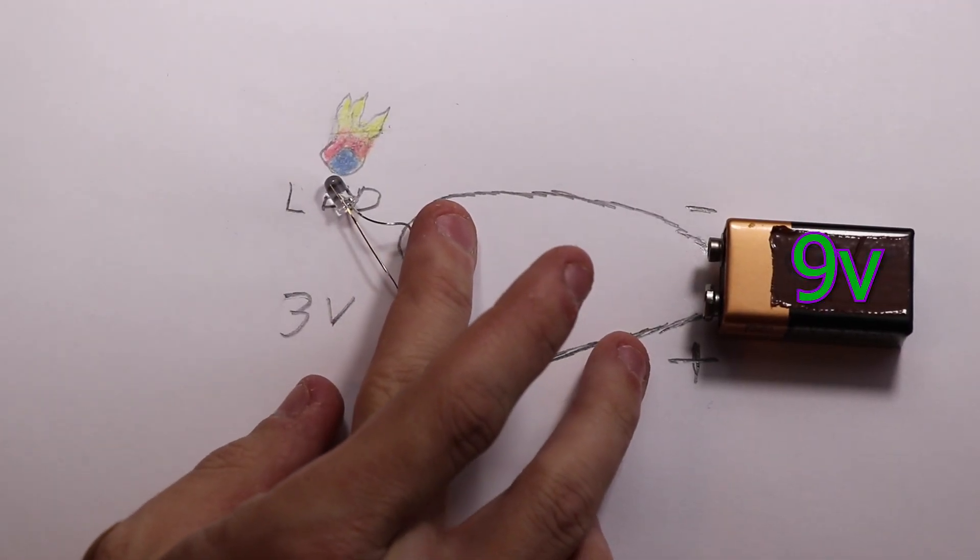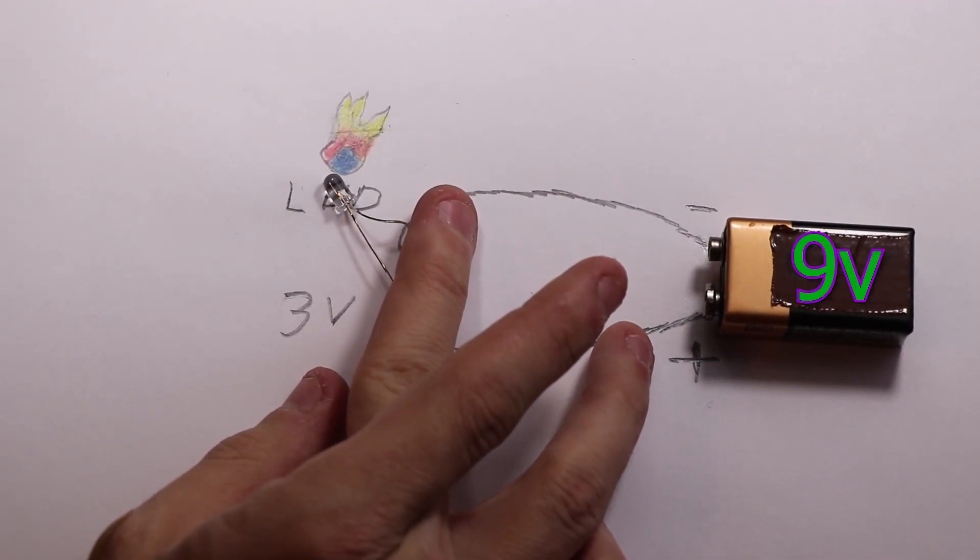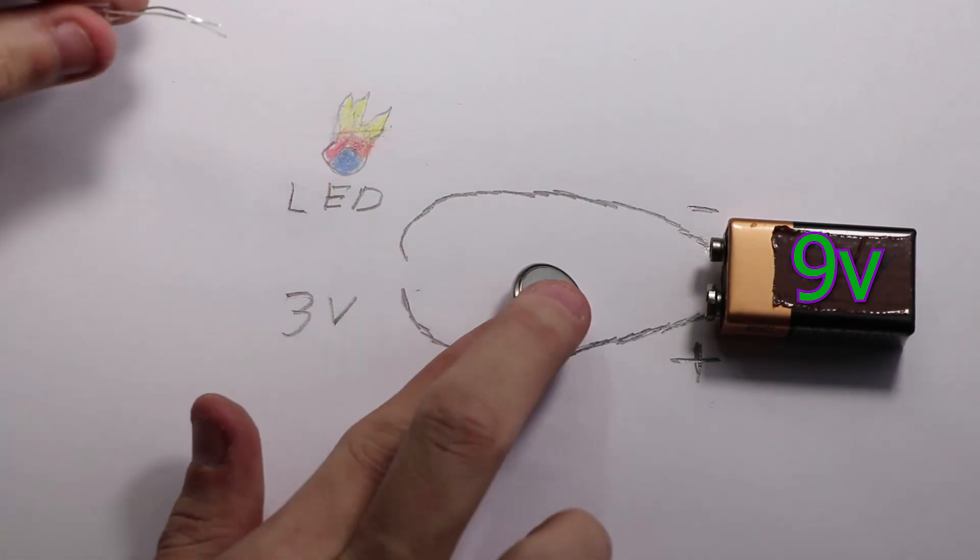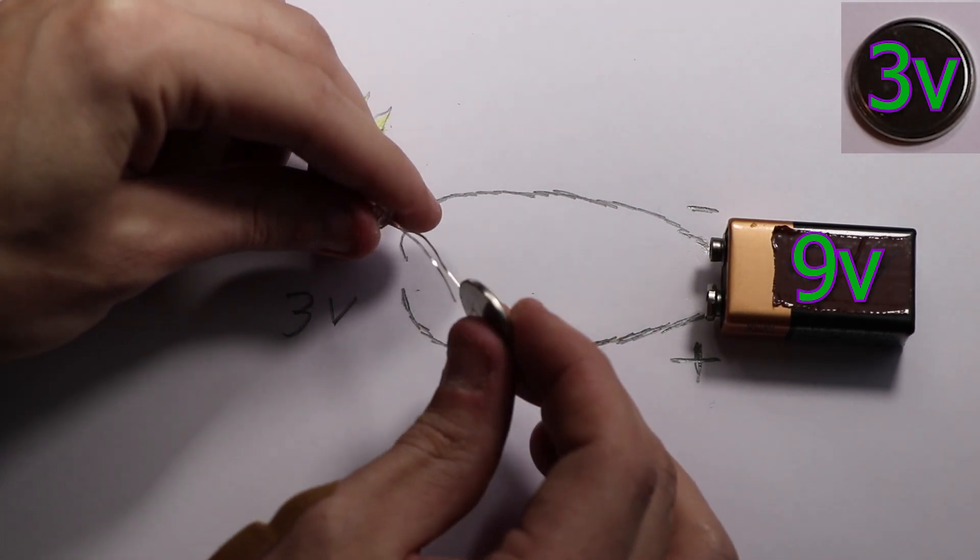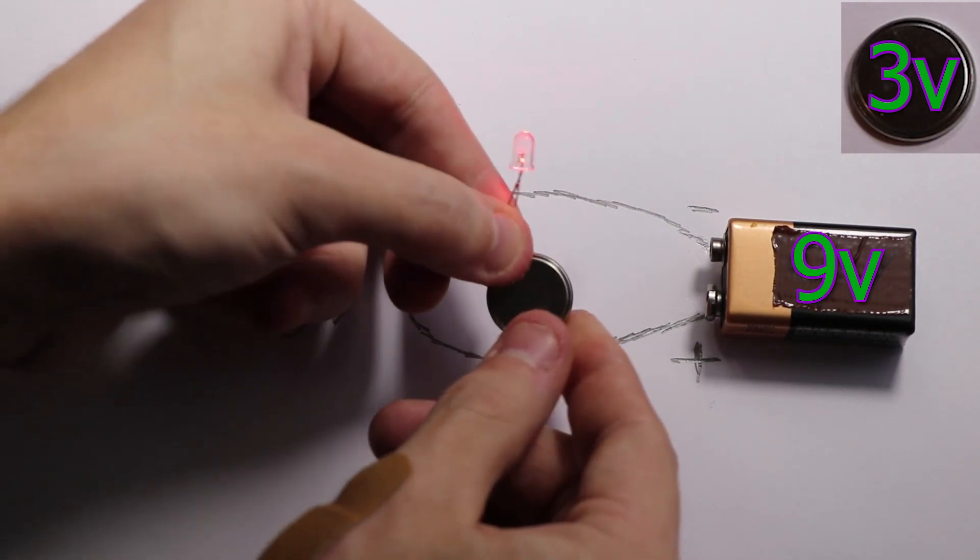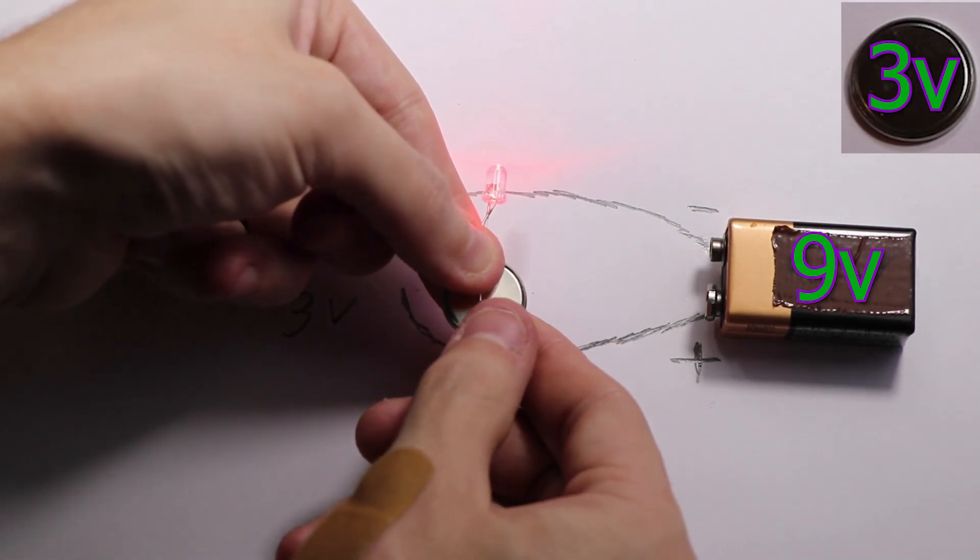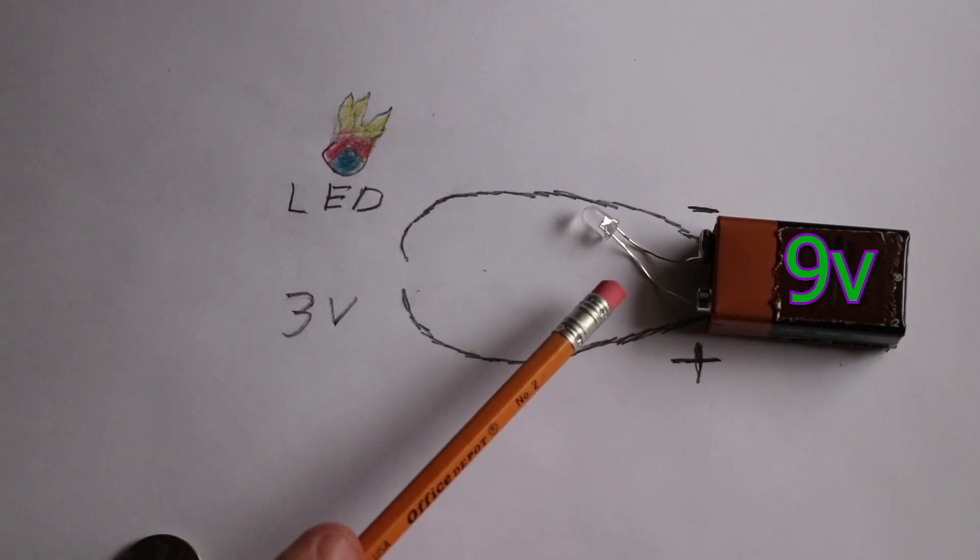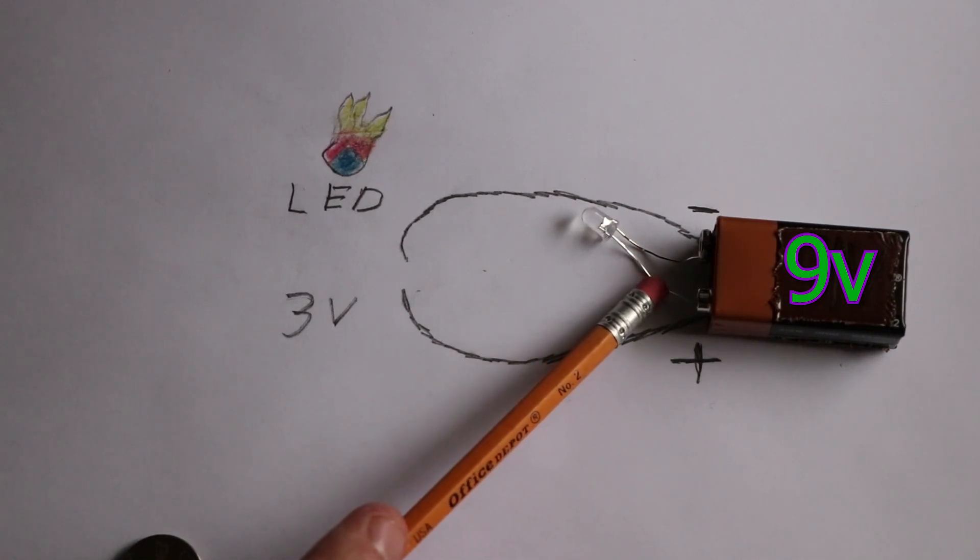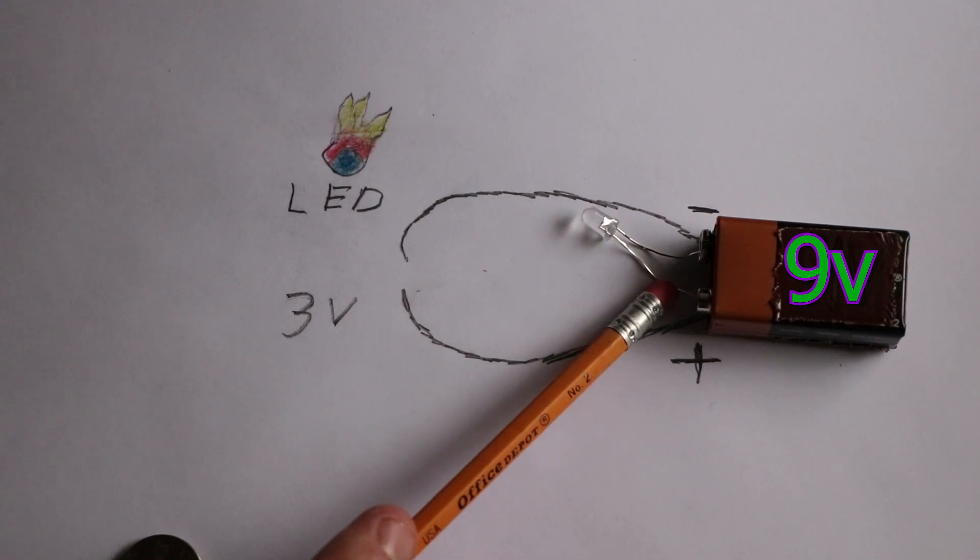If we imagine the line as a pressurized line of water leading to a sprinkler, which would be the LED, then the pressure in the line represents the voltage. Not enough pressure and the sprinkler won't work, but too much pressure and it will explode. With this LED it's about the right voltage. The 3-volt battery is working fine. Let's try the 9-volt. I'm not sure what will happen—maybe a large flash or small fire. That was kind of anticlimactic.